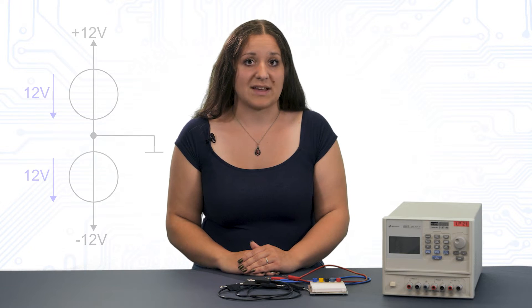For example, plus 12 and minus 12 volts. To be able to provide these voltages with our power supply, we need both adjustable outputs.